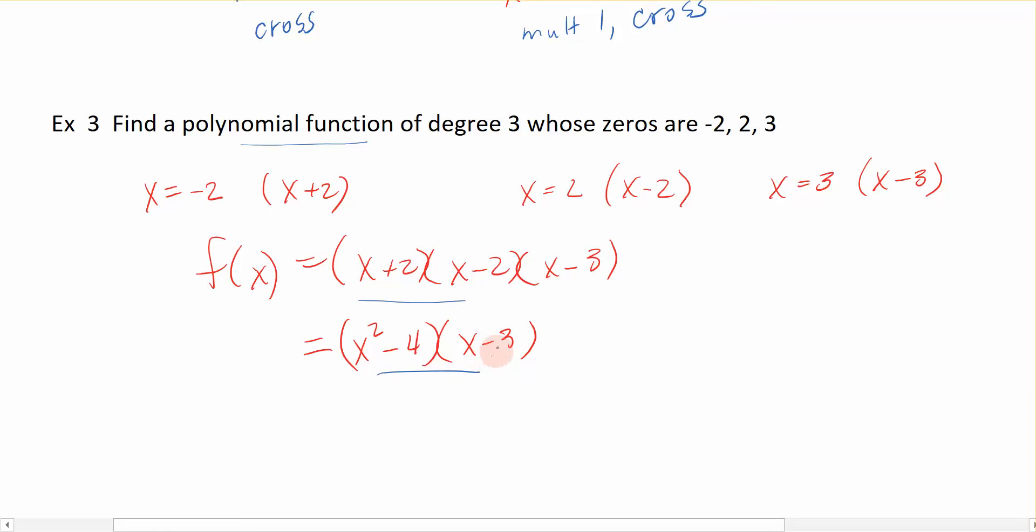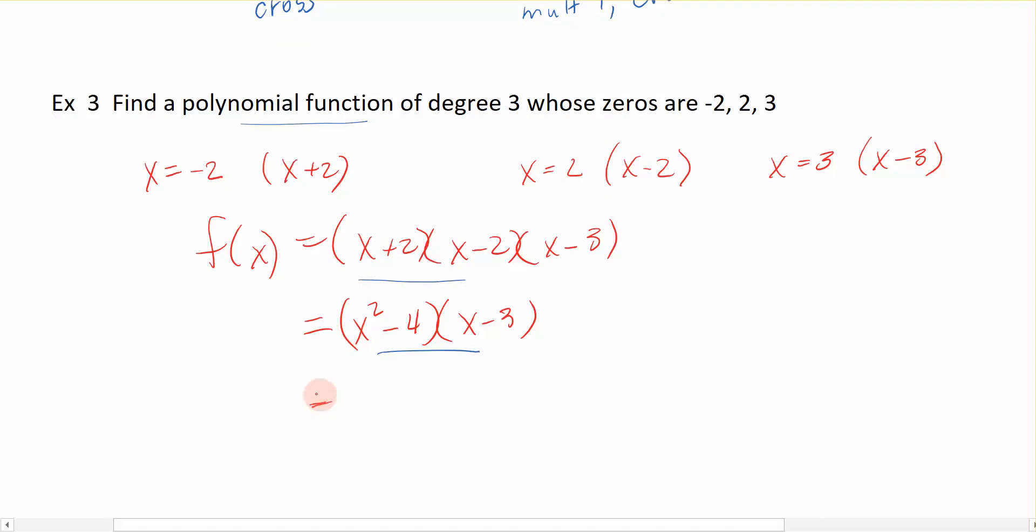And again, working in pairs, I don't have anything special here to multiply, so I just foil this. x² times x is x³. Here we have minus 3x². In the center, we have minus 4x. And then last, we have plus 12. So this is the expanded form of my third degree polynomial who had zeros at negative 2, 2, and 3.